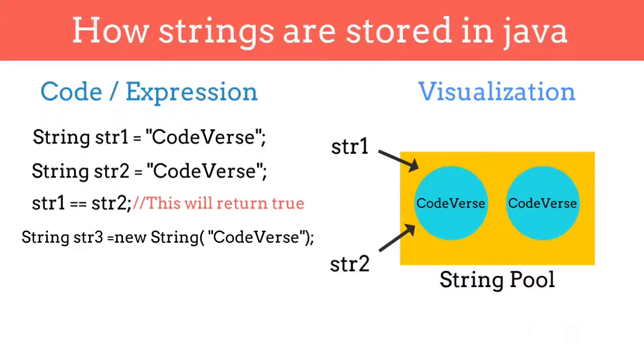Now you can see that str2 and str3 contain the reference to different objects with the same value. So if we write str2 double equal to str3, then it will return false.